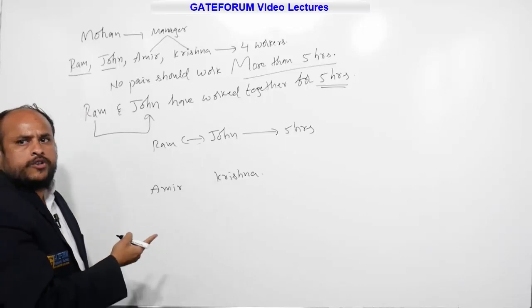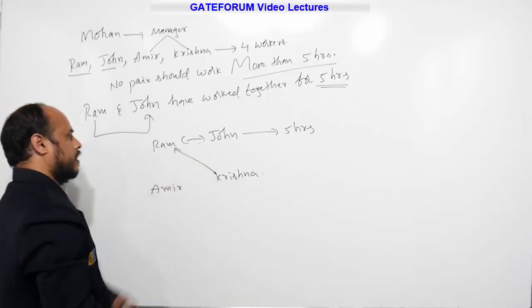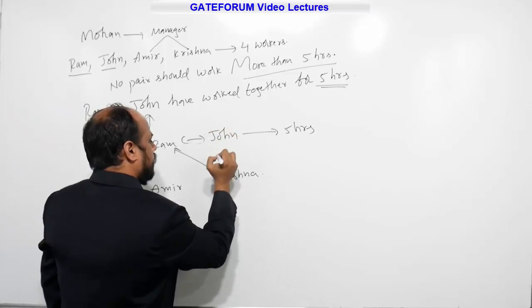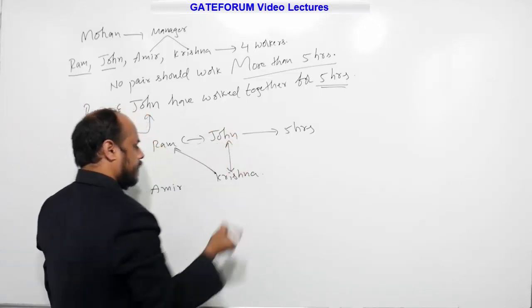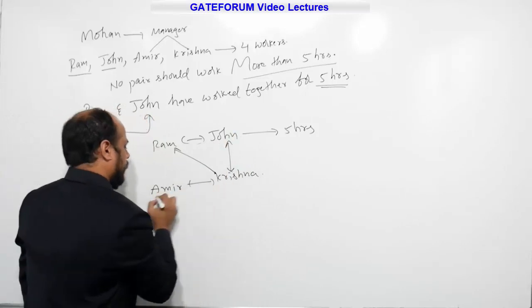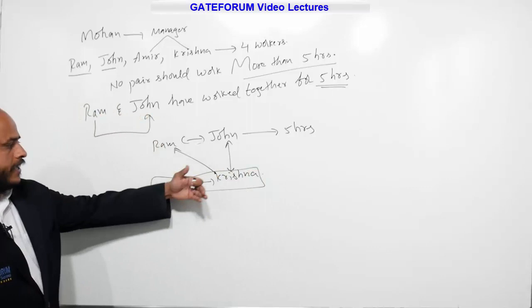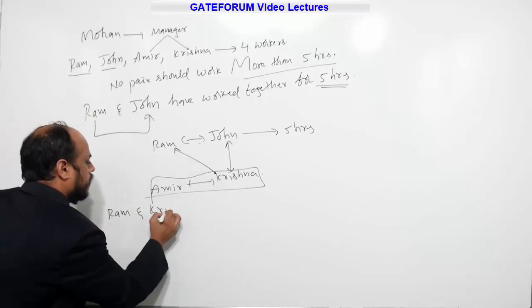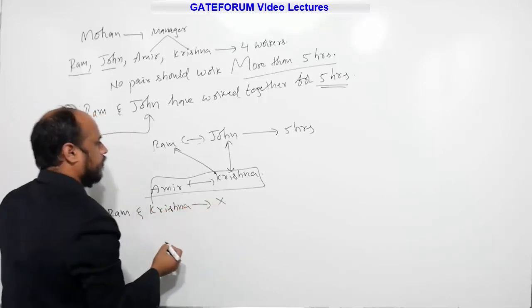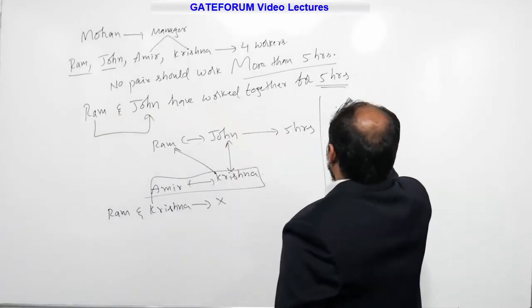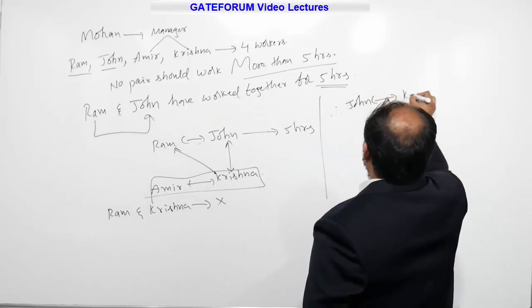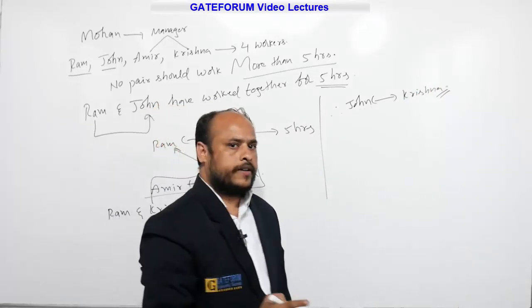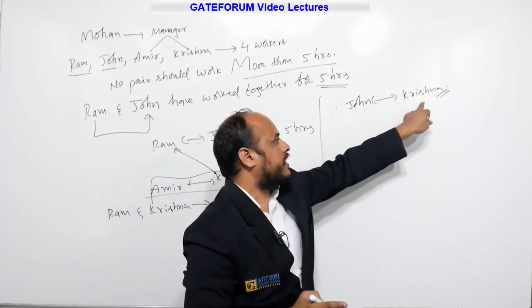Krishna does not want to work with Ram. This means we should not take Ram and Krishna as a pair. Therefore, according to the given data, Krishna must work with John. So clearly, Ram and Krishna together is not possible, and John must work with Krishna. Mohan should allot Krishna to work with John — that is the only possibility from the options.